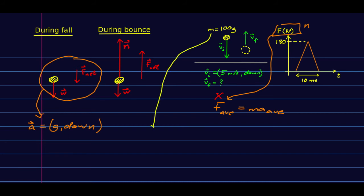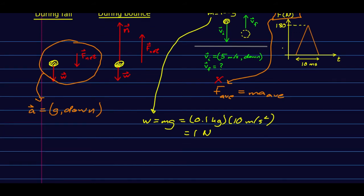We can easily calculate what the weight was. We know the weight is just mg, so that is 100 grams—0.1 kilograms times g, which is basically 10. That's a newton. But the force due to the floor, the normal force, is much larger than that. And in particular, if we want to know the average.